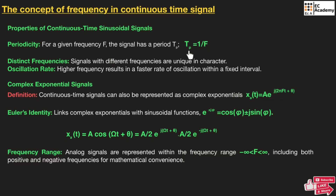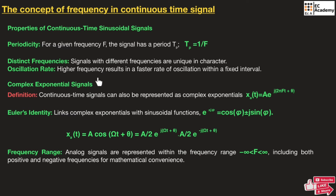The time period and frequency are inversely proportional. The second property is distinct frequencies: signals with different frequencies are unique in character. The third property is oscillation rate: higher frequency results in a faster rate of oscillation within a fixed interval. As frequency increases, the rate of oscillation also increases.